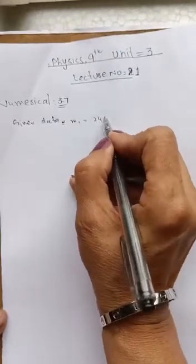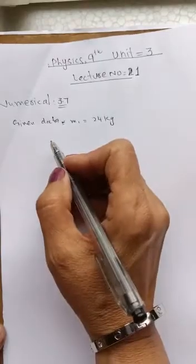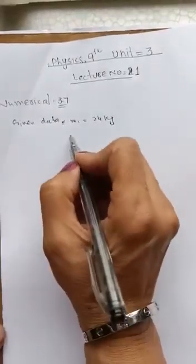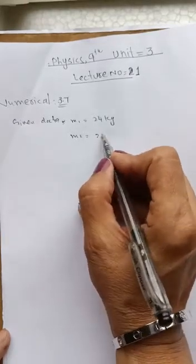The mass m1 is 24 kg. This is the mass which is vertically moving downward, and the m2 mass is on the smooth table. This is 26 kg.